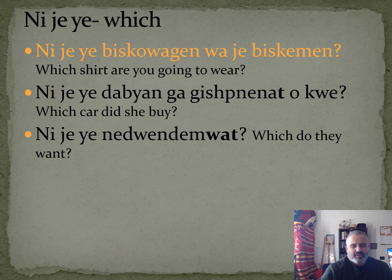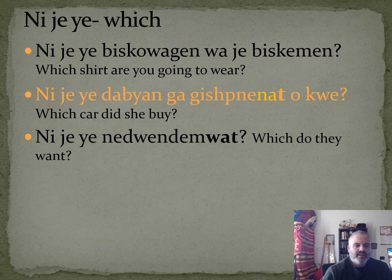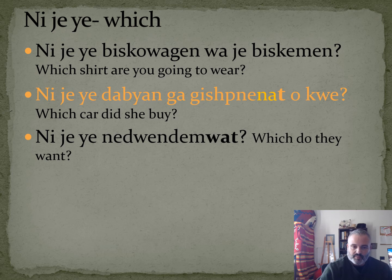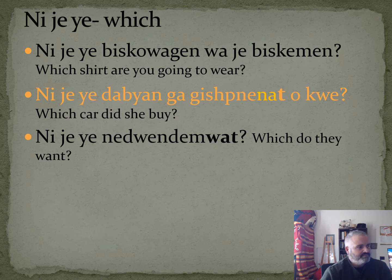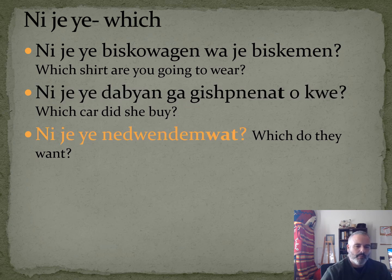Ninja ye biskawagen waja biskamon means 'which shirt are you going to wear?' — it could also be a jacket. Ninja ye dabian ga gishpana not okwe means 'which car did she buy, that woman?' — dabian is animate so you use gishpana na as the verb to buy something animate, meaning 'which one did she buy?' Ninja ye nedwindum wat means 'which do they want?'